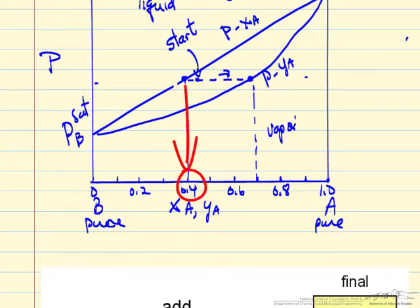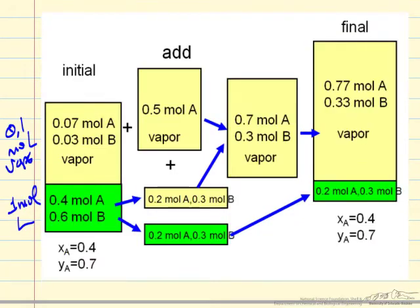mole fraction of A is 0.4. It's enriched in A, so the vapor composition mole fraction is 0.7. If we have one mole of liquid, it means 0.4 moles of A and 0.6 moles of B, so the overall mole fraction for the liquid is 0.4. If we have 0.1 moles of vapor, it means 0.07 moles of A and 0.03 moles of B, so the overall composition of the vapor is 0.7 mole fraction.